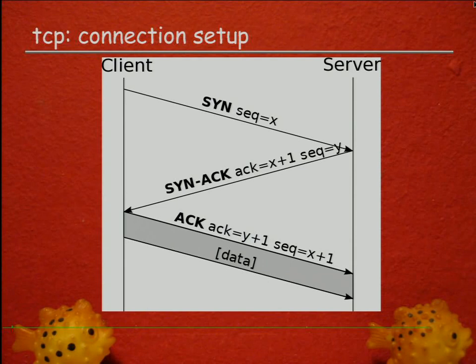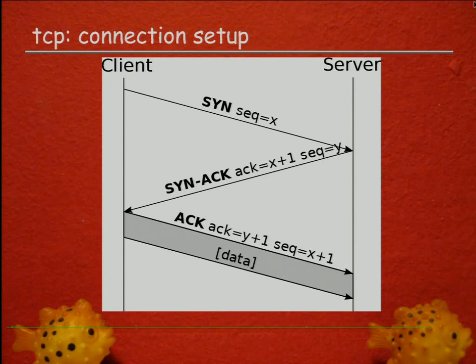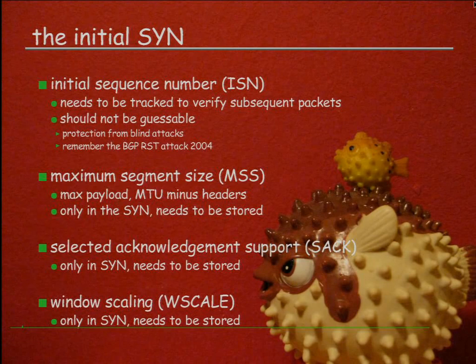Connection setup: the client sends the SYN packet with its initial sequence number. The TCP server, if it accepts the connection, replies with the SYN-ACK, acknowledging the sequence number plus one and sending its own initial sequence number. The client then sends an ACK, acknowledging the server's sequence number incremented by one. These replies require knowledge of the previous packet because they quote the sequence number plus one.